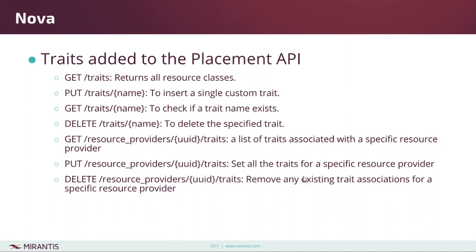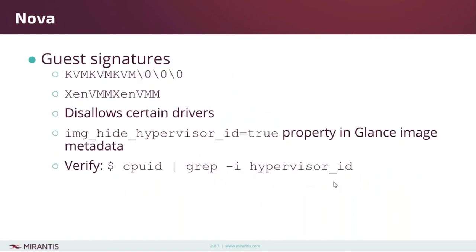The placement API is involved in making more intelligent choices on where workloads get scheduled. One of the improvements in Pike is the addition of traits. Traits enable you to set certain characteristics on resources, and the placement API can then use those traits to decide whether to schedule a workload in a particular place.